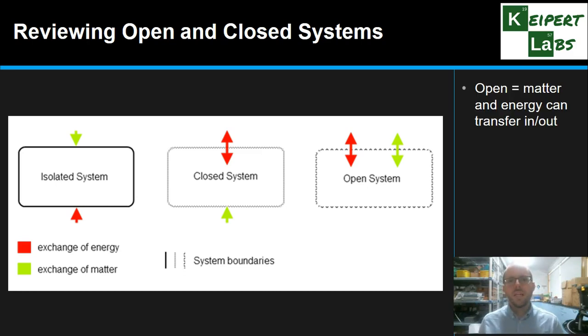So an open system is a system where matter and energy can transfer in and out. So a beaker that is open to the rest of the room is an open system. And so the water that's in there can evaporate, or the gas that might be produced in there can escape into the rest of the room. It's not contained within the system of the beaker anymore.